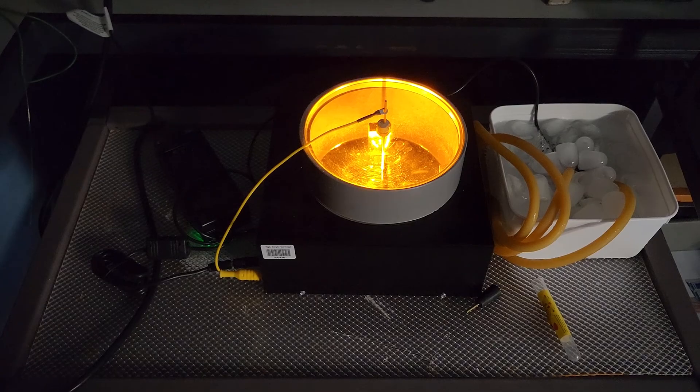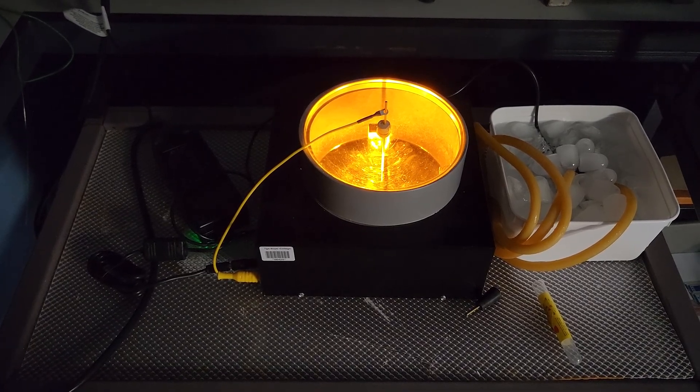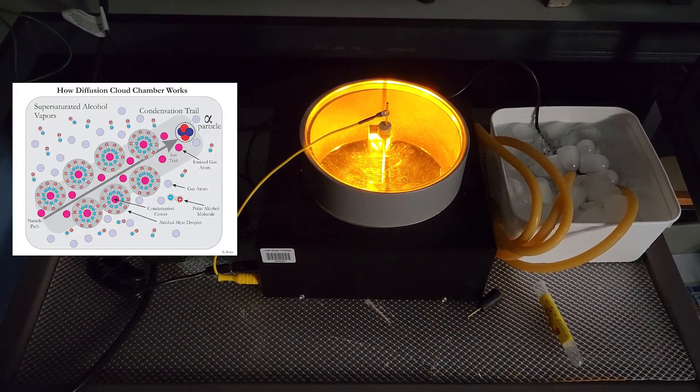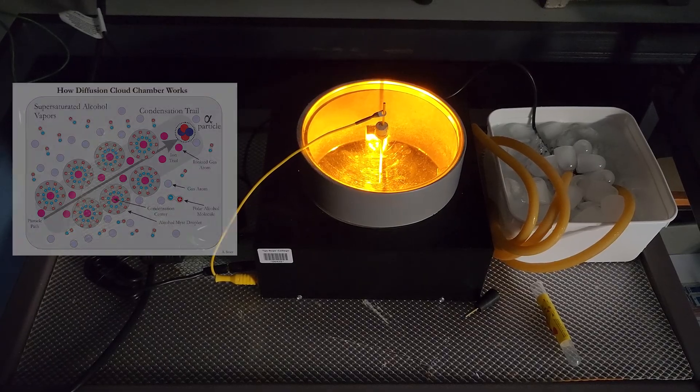This is a cloud chamber. It consists of a supersaturated alcohol vapor through which particles of radiation create trails of ionized gas particles, which causes the vapor to condense into visible tracks. The current tracks are produced by the small amounts of radioactive isotopes normally present in our environment.